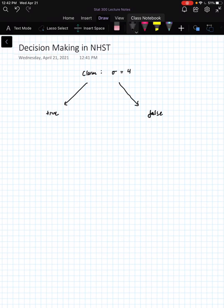There's two real possibilities here that we may not even ever know definitively, but it's either true or it's false. Either sigma is equal to 4 or it's not equal to 4.